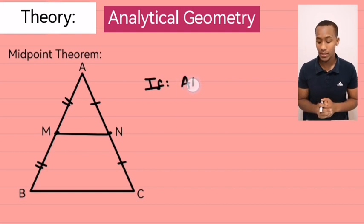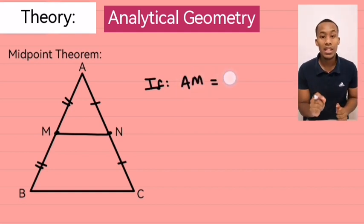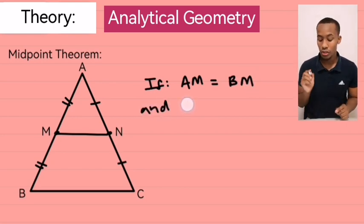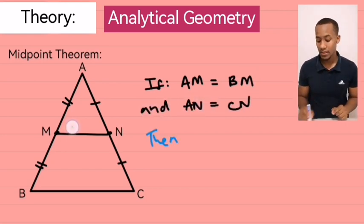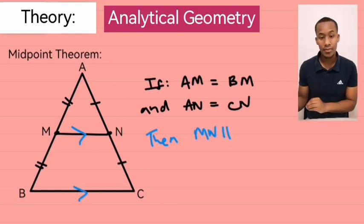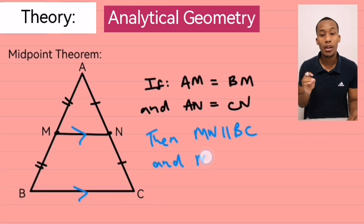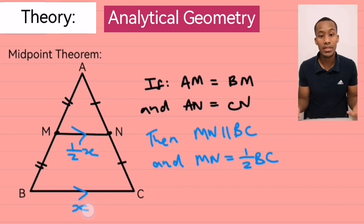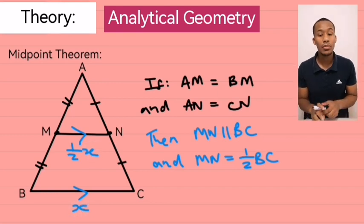then AM is equal to BM and AM is equal to CM. This makes MN parallel to BC and MN half the size of BC. So, if BC is equal to X units, then MN would be half of that X units.